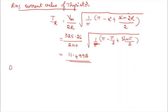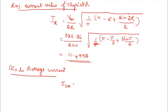Next, diode average current. Diode average current IdA equals Vm divided by pi into R. Substituting: 325.26 divided by pi into 10, which gives 10.35 amps.